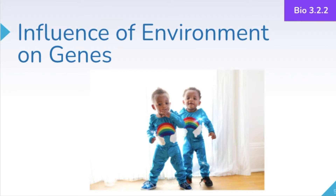We'll also talk about how genes can be influenced by the environment. For example, in identical twin studies we can see that identical twins separated at birth can have different heights and weights after 20 years. Most likely the cause of these differences is that each twin was provided a different diet and had different physical activities throughout their lifetimes, because environment does play a role in influencing individuals.